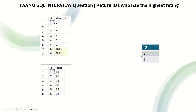Also, if an ID does not have a friend, it is retrieved only if its rating is greater than 85. ID 5 has a rating of 82 which is less than 85, so ID 5 will not be returned. But ID 6 has a rating of 91 which is greater than 85, so ID 6 is returned. Hopefully you all understood the question — now let's see how to solve it.